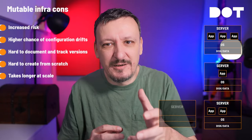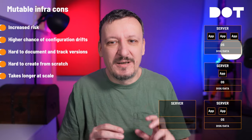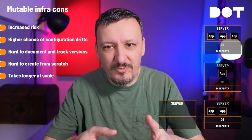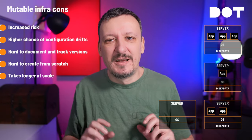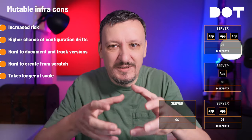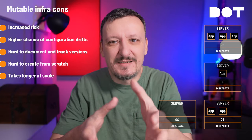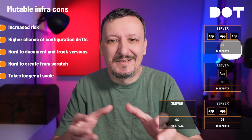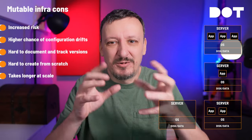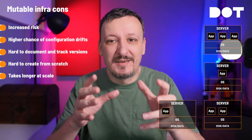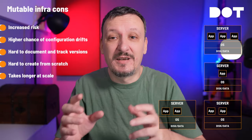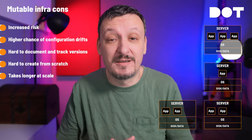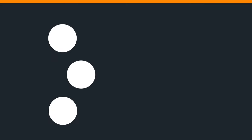If we want to create a new server with a new operating system, new data, and new applications that are the same as something else, we need to build all that — build the server, install the operating system, put data there, and then deploy all the instances of the applications that are supposed to be running in that server.